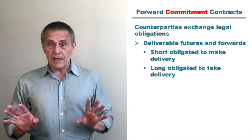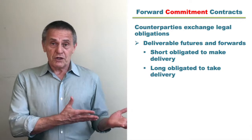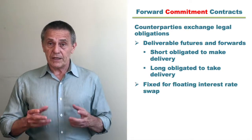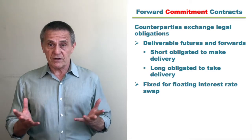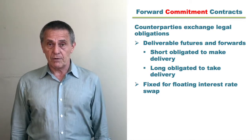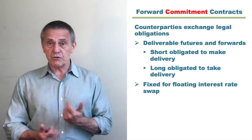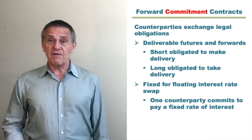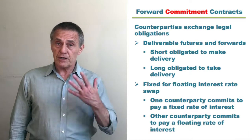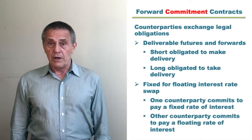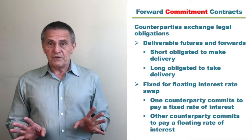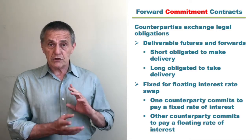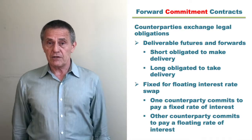To expand things just a little bit: a plain vanilla fixed-for-floating interest rate swap would be the best vehicle for illustrating the concept. What are the counterparties to a plain vanilla interest rate swap exchanging? One party is committing to pay a fixed rate of interest. The other party is committing to pay a floating rate of interest. The point is that all forward commitment contracts result in the counterparties exchanging legal obligations.